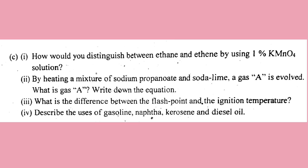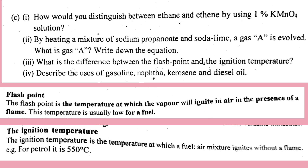What is the difference between flashpoint and ignition temperature? The flashpoint is the temperature at which the vapor will ignite in air in the presence of a flame; this temperature is usually low for a fuel. The ignition temperature is the temperature at which a fuel-air mixture ignites without a flame, for example 550 degrees Celsius.